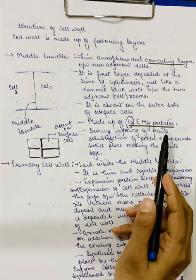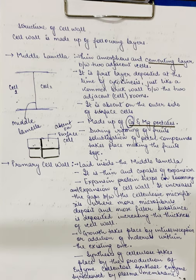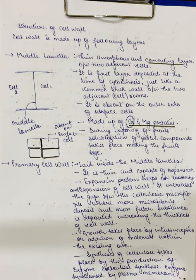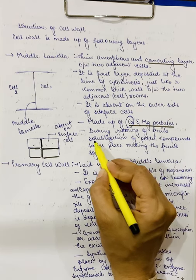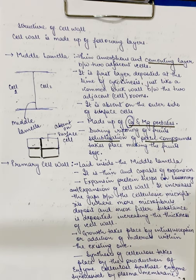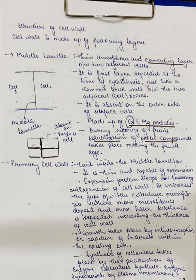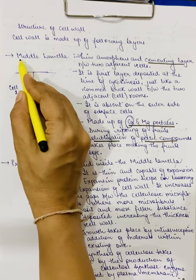During the ripening of fruits, you might have noticed that raw fruits are hard but as they ripen they become very soft. The softening happens because the middle lamella present in the pulp gets solubilized to pectic compounds, making the fruits soft. So, to summarize about the middle lamella: it is the first cell wall formed at the time of cell division, it is the cementing layer between two adjacent cells, it is absent on the outer side of surface cells, it is made up of calcium and magnesium pectate, and during ripening of fruits it solubilizes to form jelly-like substances making the fruits soft.